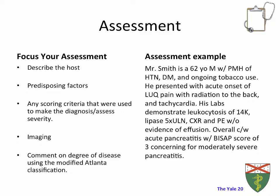Now it's time to write up the diagnosis. Your assessment should describe the host, the history and predisposing factors, the criteria used to determine admission level, any imaging that supports or refutes the diagnosis, and a comment on the degree of disease using the modified Atlanta classification — mild, moderately severe, or severe — determined by the presence of acute organ failure and persistence of organ failure beyond 48 hours.